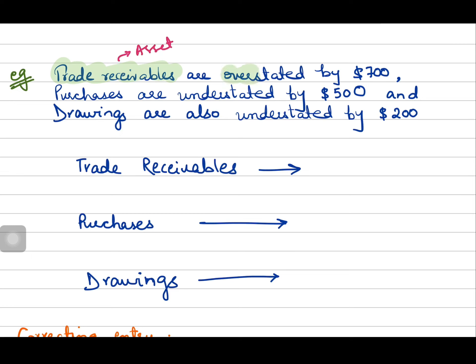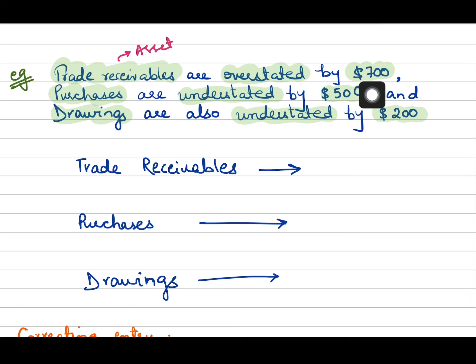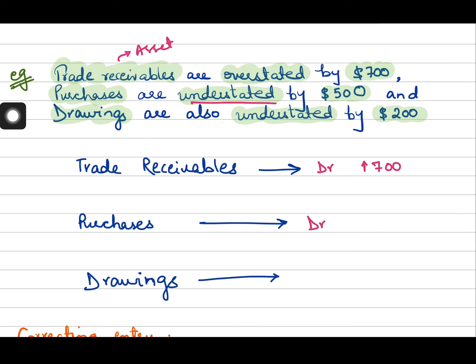Let's move to another example. Trade receivables, which are an asset for the business, are overstated by seven hundred dollars. Purchases are understated by five hundred dollars, and drawings are understated by two hundred dollars. In this case three accounts are affected, however they are not affected because of the same transaction. Trade receivables appear on the debit side and are overstated by seven hundred dollars. Purchases also appear on the debit side and are understated by five hundred dollars. Drawings also appear on the debit side as a contra capital account and are understated by two hundred dollars.